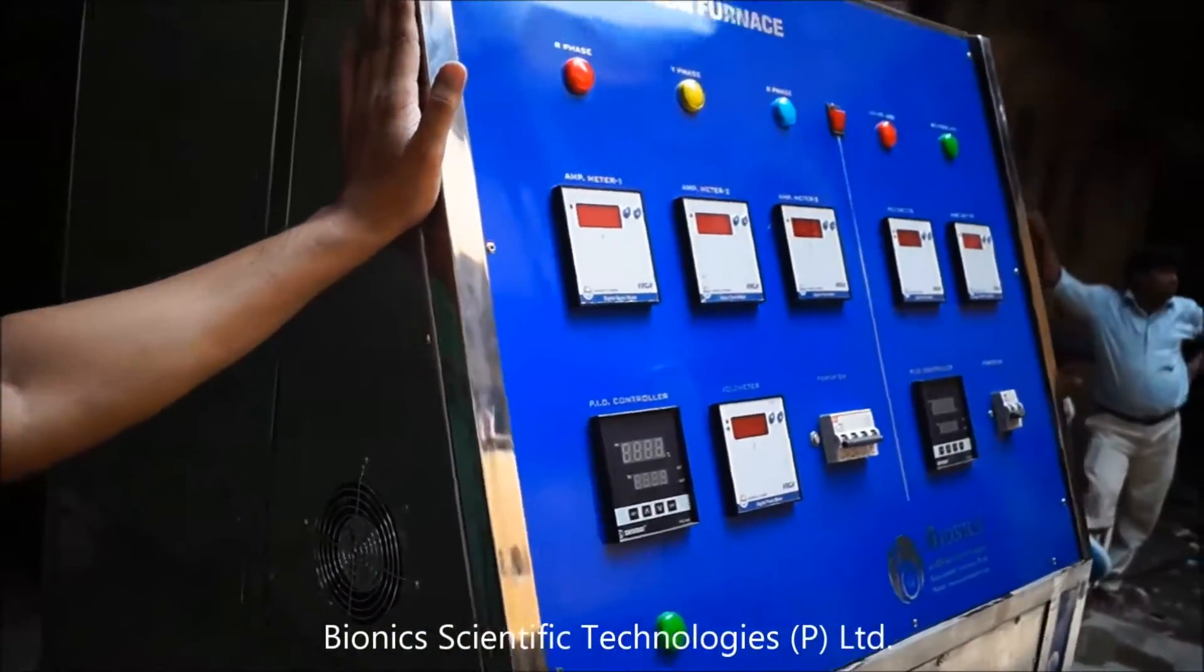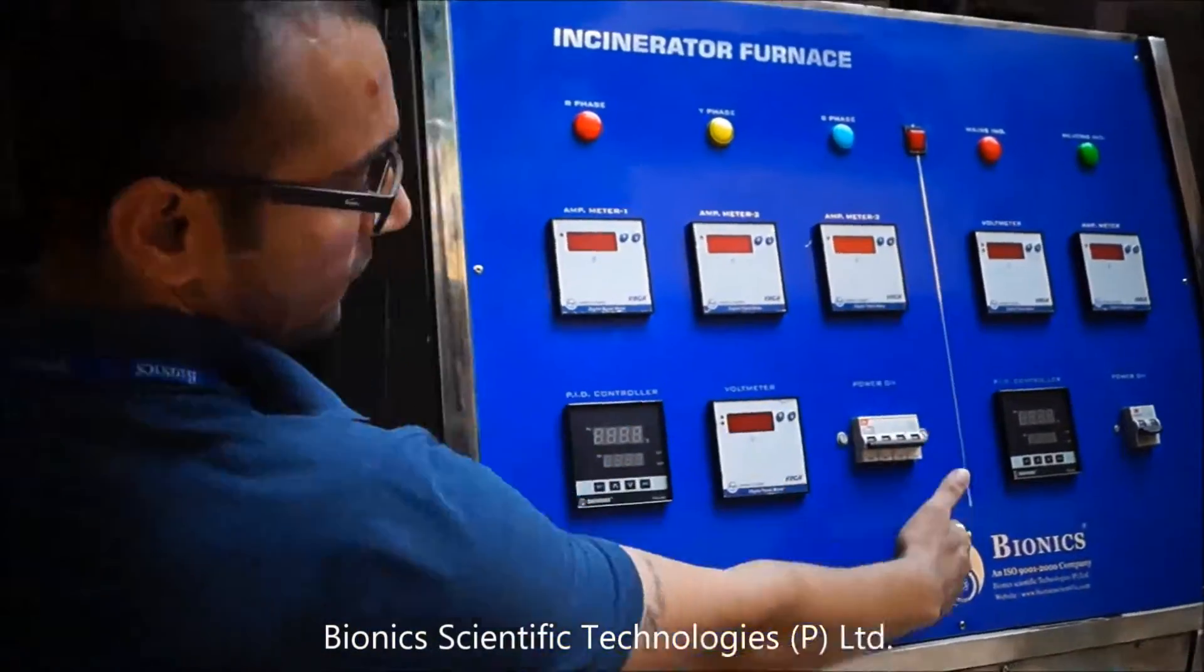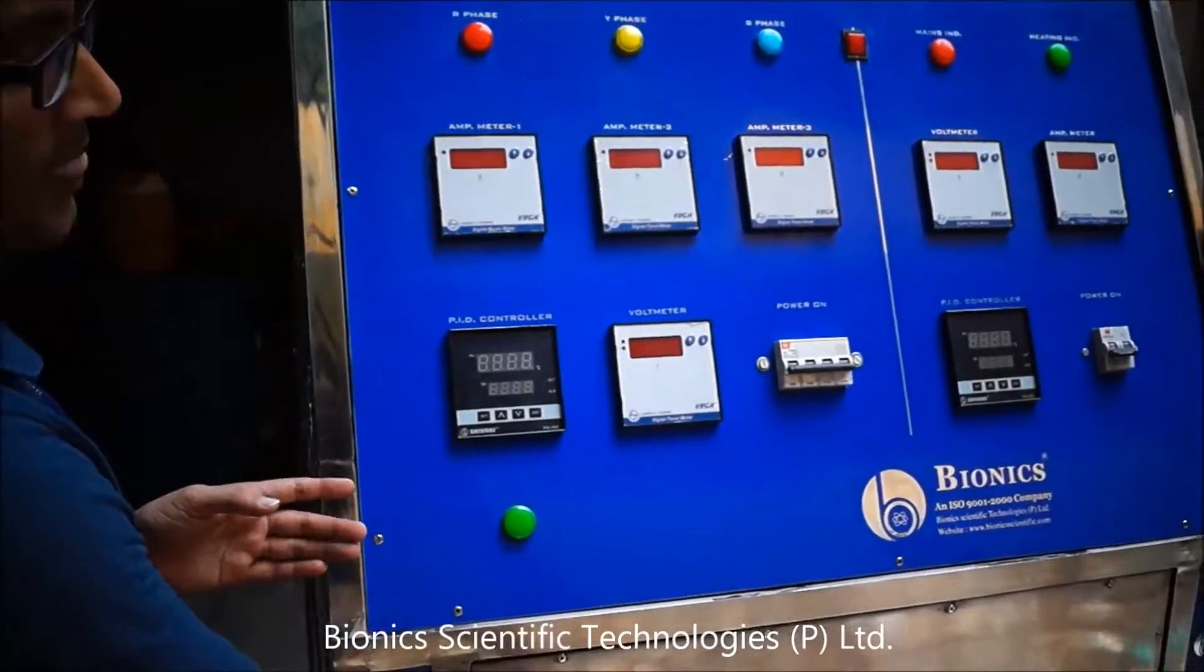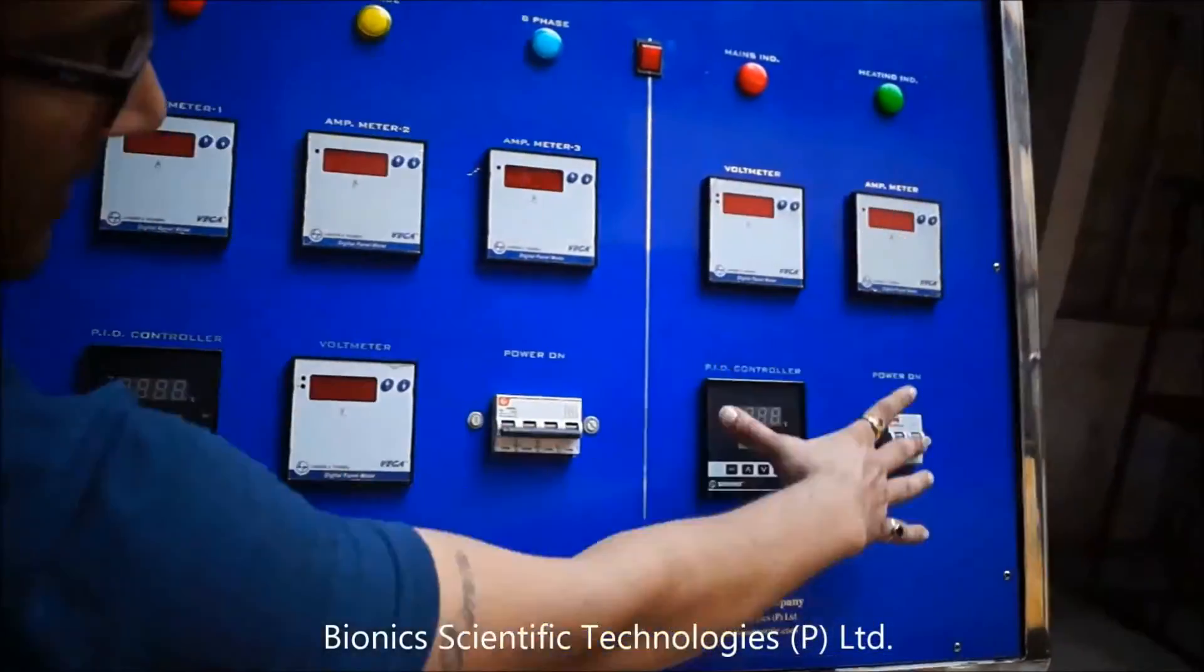This is control system of our incinerator. This part of control panel is for primary chamber. This part of control panel is for secondary chamber.